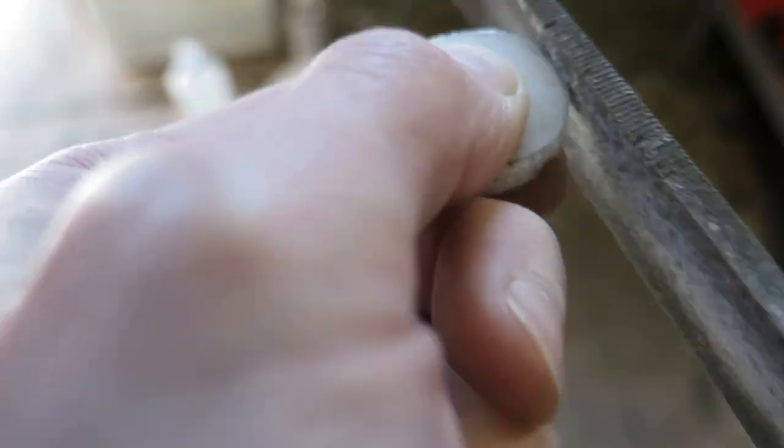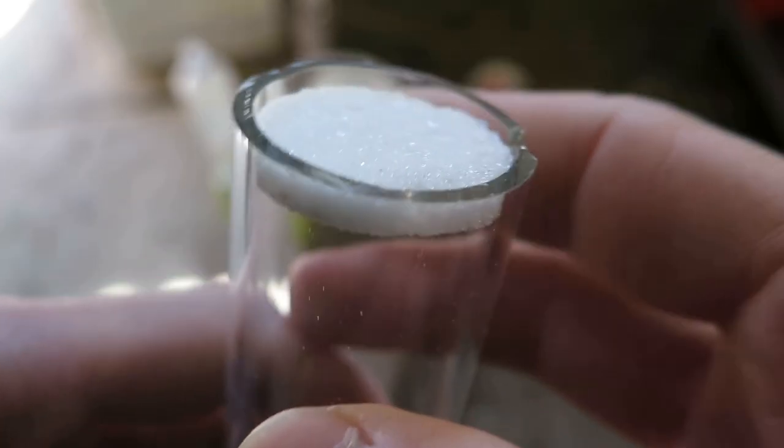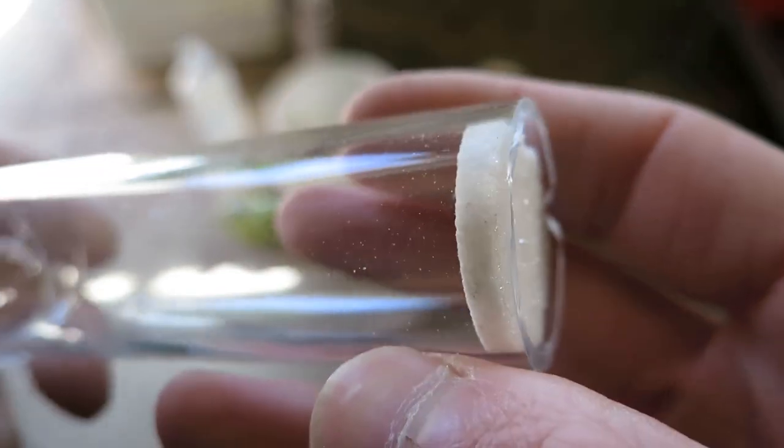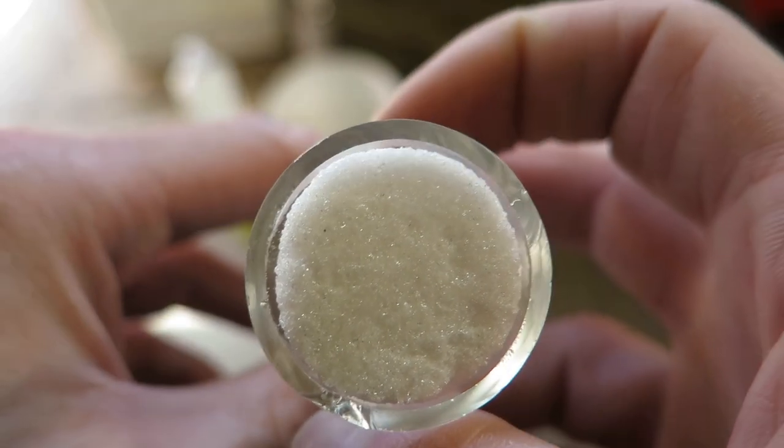To check if I can actually process this with my torch, I formed a circle using a file. I can feel that the structure is not quite uniform, but what can you do. Anyway, it fits relatively nicely into the tube.